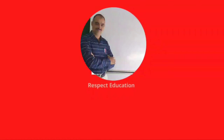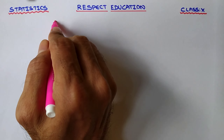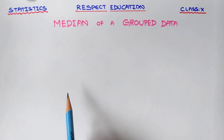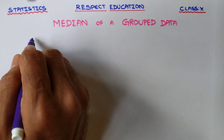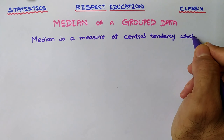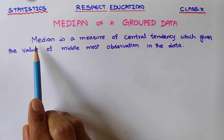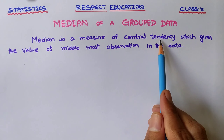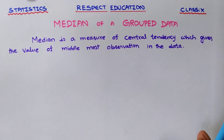Welcome back to our channel, Respect Education. Now we see median of a group data. If we see the definition of median, median is a measure of central tendency which gives the value of the middlemost observation in the data.